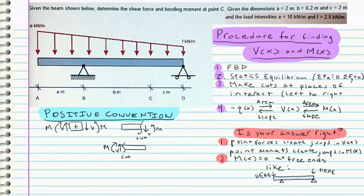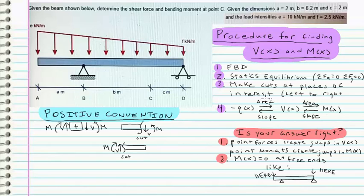Starting with step one, we create a free body diagram. Then we do some statics and find some of the forces in x and y. Then we make cuts at places of interest, so at C in this problem. Then we write equations for our distributed load q, our shear v, and our moment m. Integrating the negative distributed load gives you the shear force, and then integrating once more gives you the bending moment — that's why it says area on top. Integrating gives you area, and differentiating gives you slope. Just don't forget that pesky negative sign in front of the distributed load.